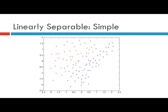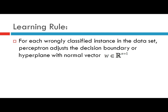Consider a data set with two classes given by the red crosses and the blue crosses. The target is to separate these two classes with a decision boundary or decision hyperplane. In the two-dimensional case, the decision boundary is just a line, and as you increase the dimension, it becomes a separating hyperplane with normal vector W. The perceptron learning algorithm adjusts the decision boundary for each error it makes — it learns from each wrong decision on the training set.